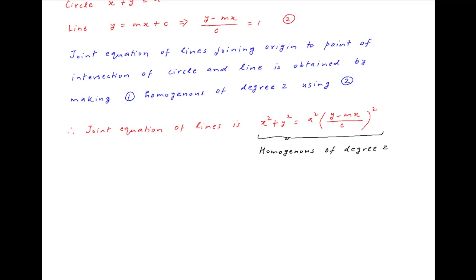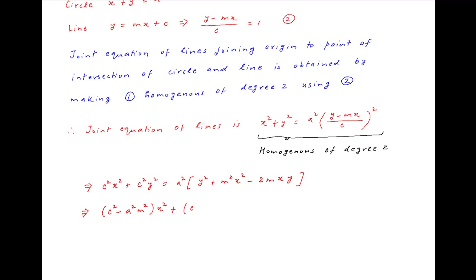Multiplying both sides by c², we get c²x² + c²y² = a²(y² + m²x² - 2mxy). Collecting the coefficients of like terms, we get (c² - a²m²)x² + (c² - a²)y² + 2ma²xy = 0. This is the required result for the joint equation of the lines joining the origin to the point of intersection of the circle and the line.